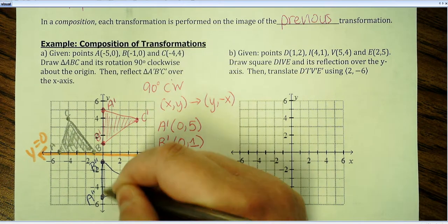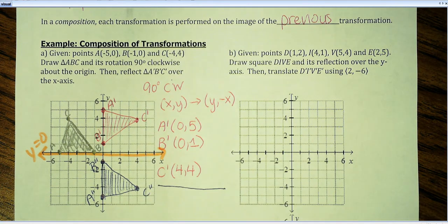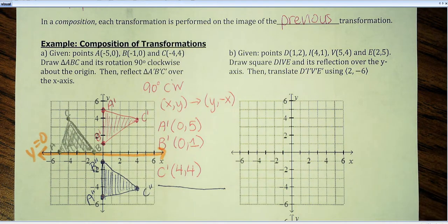And this final triangle here would be the result after two transformations, rotated 90 degrees clockwise, and then reflected over the X axis.